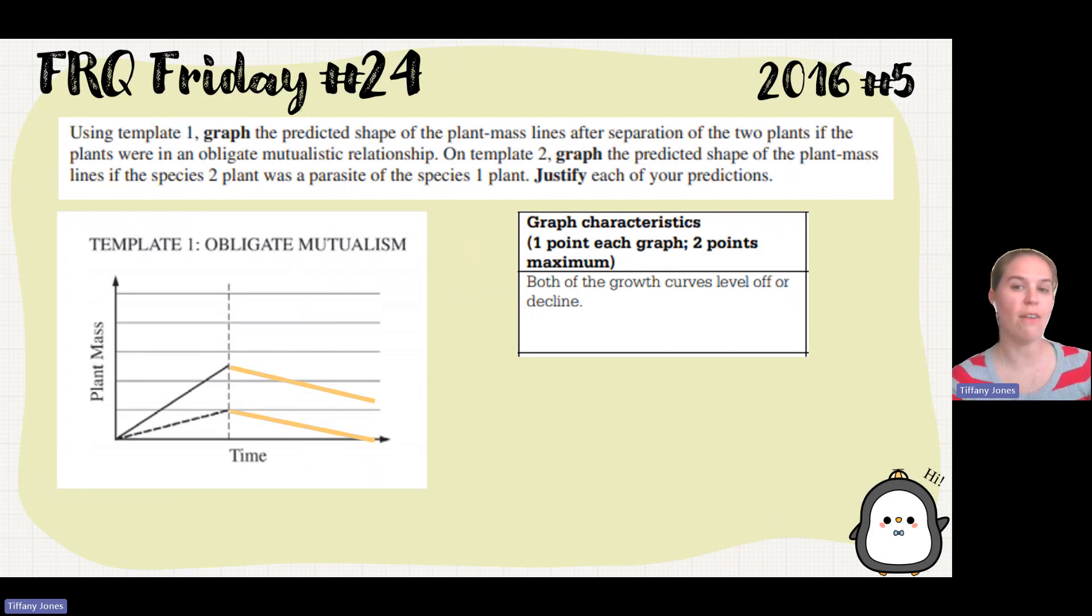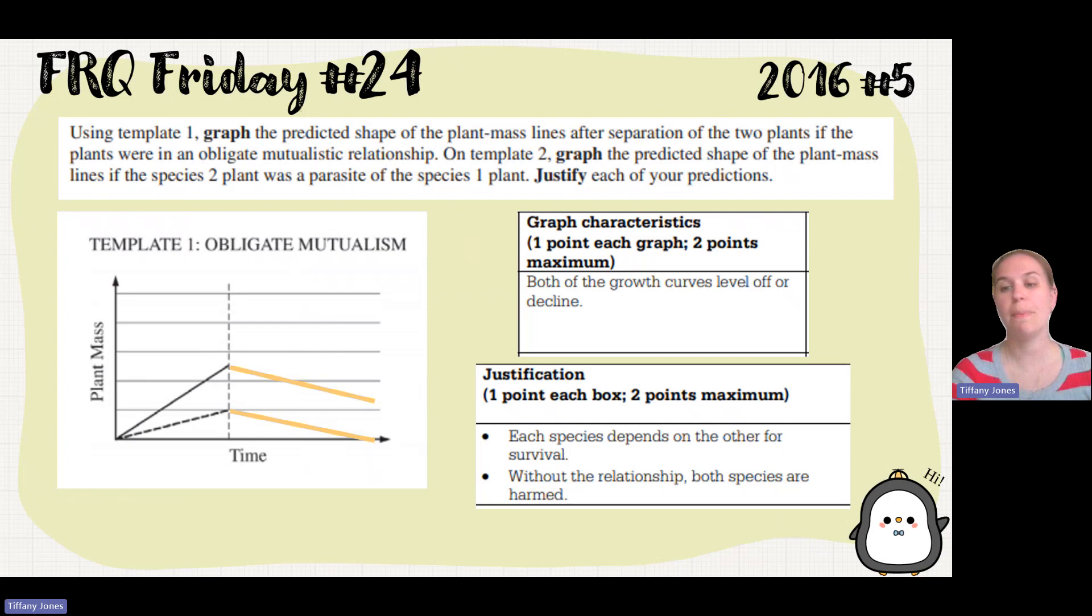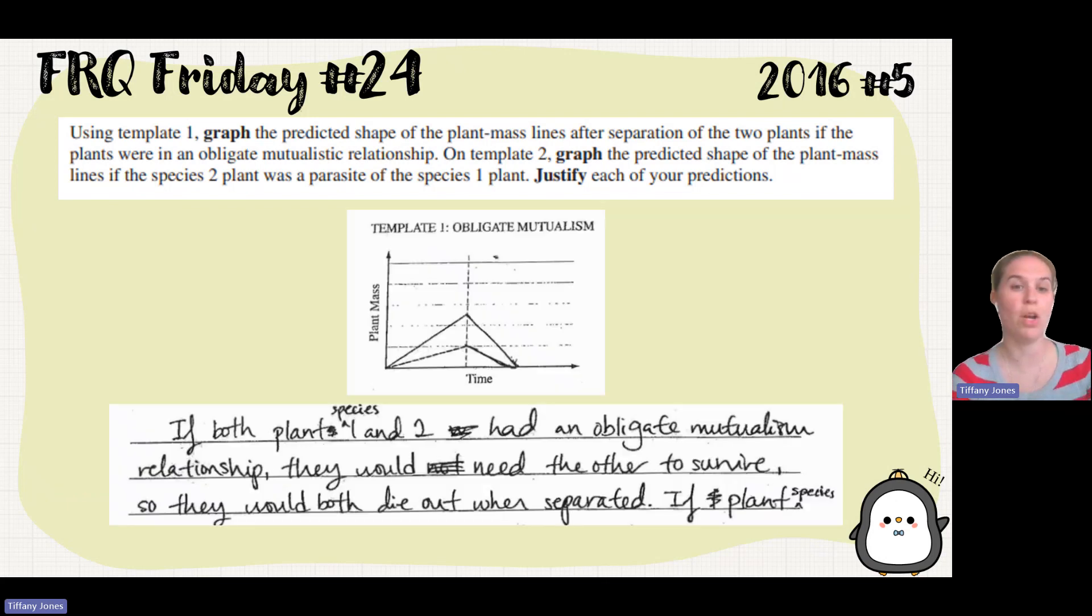So both the growth lines level off or decline. And the reasoning why is because they depend on the other for survival. Without that relationship, both of them will be harmed.